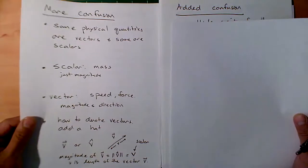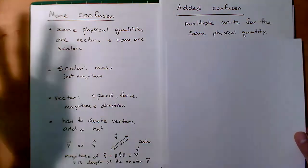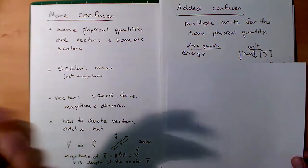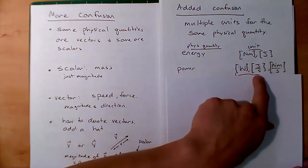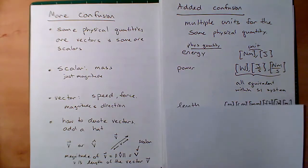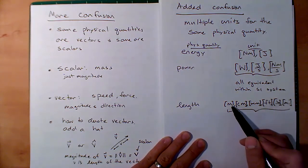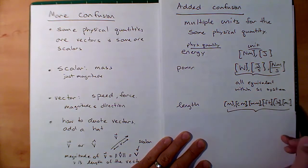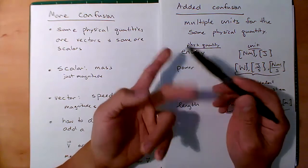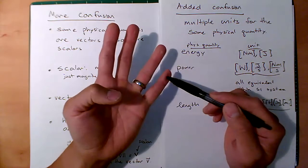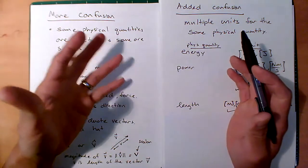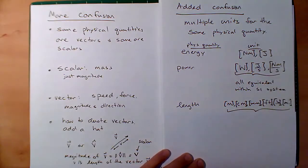There's added confusion with multiple units for the same physical quantity. Energy: Newton-meters and joules are equivalent. Power: watts, joules per second, Newton-meters per second — multiple units for the same physical quantity. Within the SI system they're all equivalent, but you might have other units that are not, like centimeters and meters require conversion. You have to know the difference. Confidence in physical quantities and units will be very helpful — this is what's going to help you build intuition.